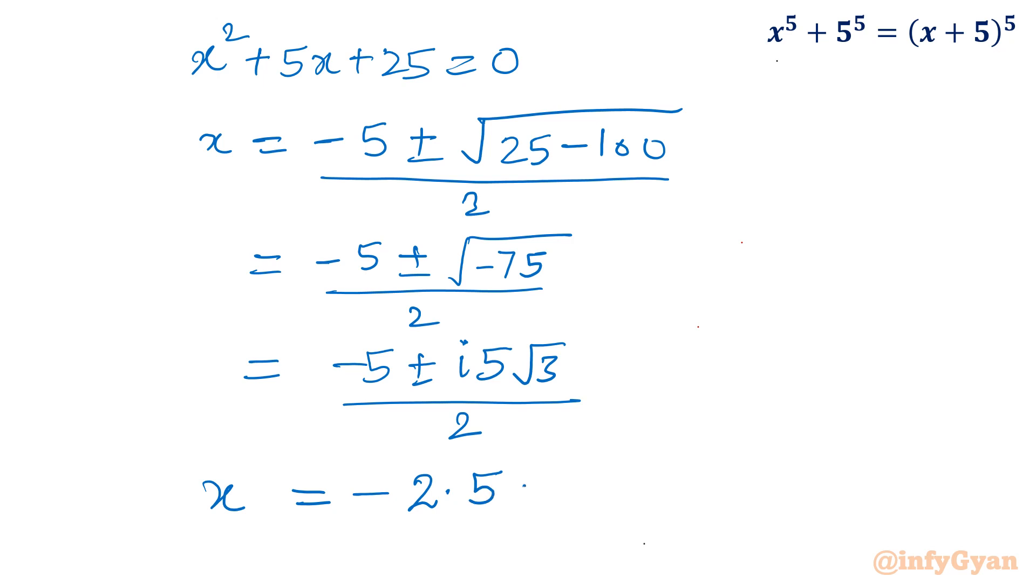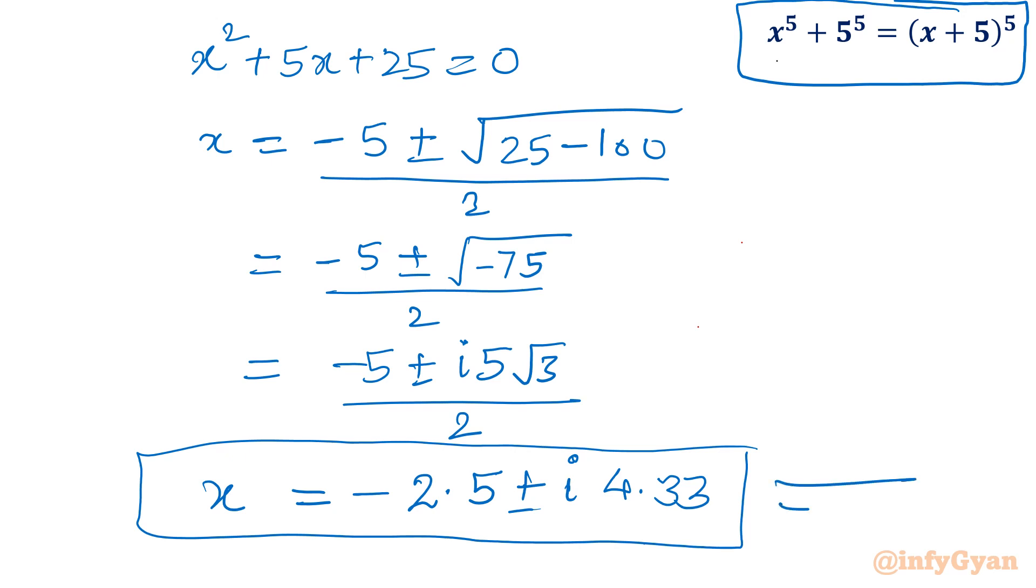If you simplify this, the value will be -2.5 ± 4.33i. So this is a degree 4 equation with four solutions: two are complex and two are real, x=0 and x=-5.